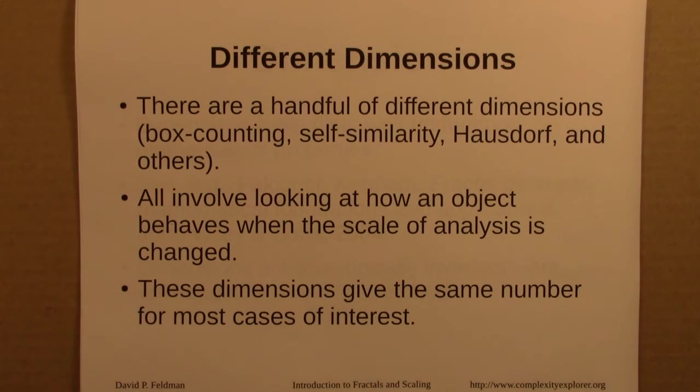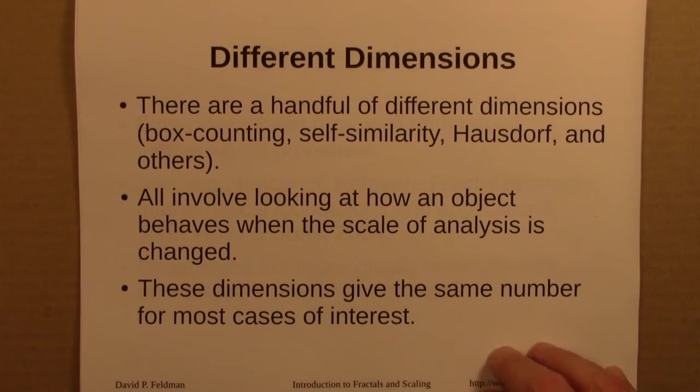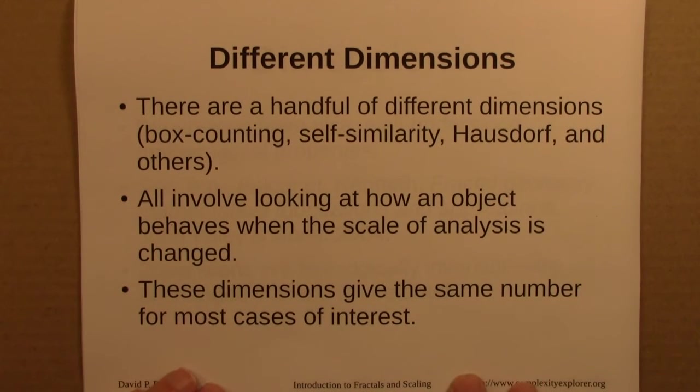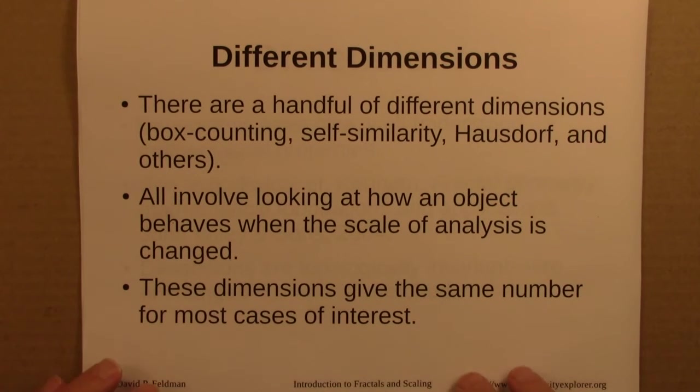Okay, a few other comments about dimensions. There are a handful of different dimensions. Box counting and self-similarity, we've talked about at length. There's also something much more formal and set theoretic, and it's the Hausdorff dimension, and there are lots of variants thereof. But all of these involve, in different ways, looking at how an object behaves when the scale of analysis is changed.